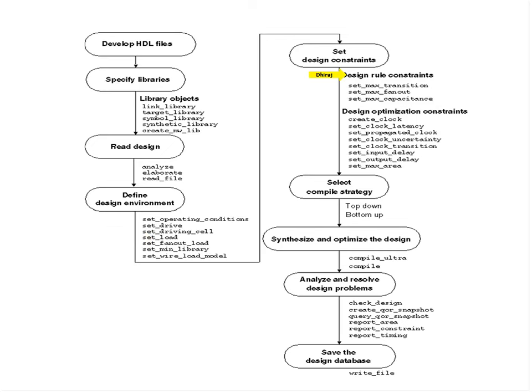When we look at the design constraints in detail we will see what they are and why they differ from block to block. We will focus on two sets of commands: design constraints and design optimization constraints. This lecture will be the end of setting up the block for synthesis; in the next lecture we will look at different compile strategies and the actual compile command.